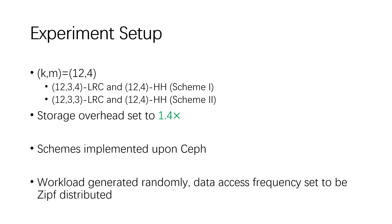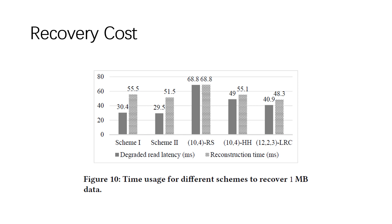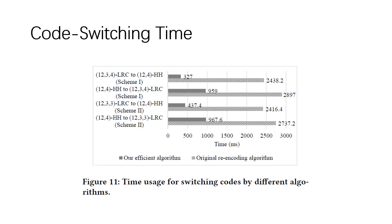In our experiments, we set K=12 and M=4, using (12,3,4) LRC and (12,4) Hitchhiker code in scheme 1. The storage overhead was set to 1.4×. We implemented the schemes on a cluster, and workloads were generated randomly with data access frequency set to be ZIP-distributed. As the results show, our scheme performed excellently in degraded read latency. As predicted, scheme 2 was slightly better than scheme 1. Using our code switching algorithm, switching time can be greatly reduced.